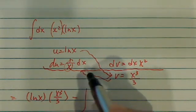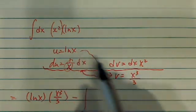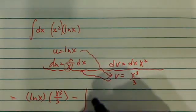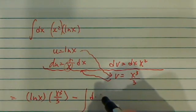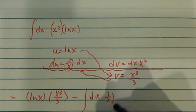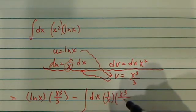So all I have is two lines, okay, uv minus v du. So du is here, which is dx 1 over x times x cubed over 3.